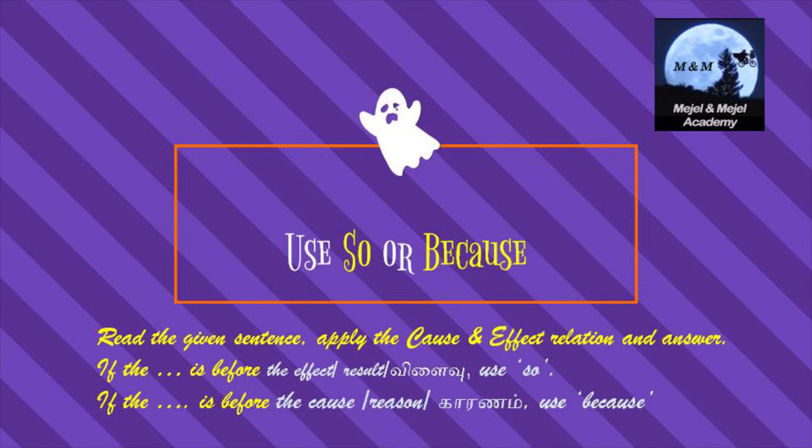Now we are going to have an exercise: use 'so' or 'because'. Before doing it, read the given sentence and apply the cause and effect relation. If the dash comes before the effect, use 'so'. If the dash comes before the cause or reason, use 'because'.